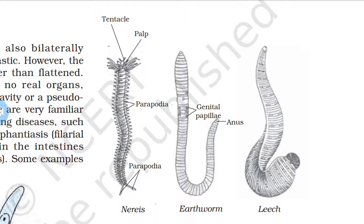The segments are arranged from head to tail. These animals are found in a variety of habitats like freshwater, marine water, as well as land. Earthworms, leeches, and Nereis are familiar examples of Annelida.